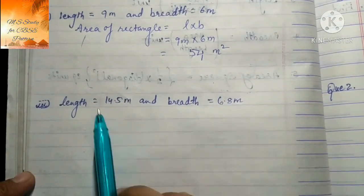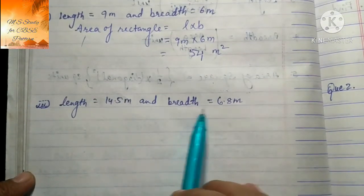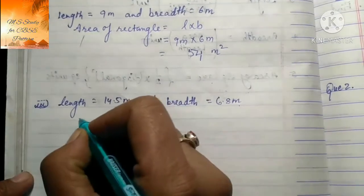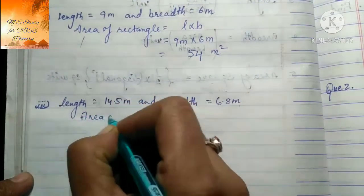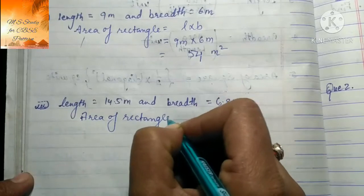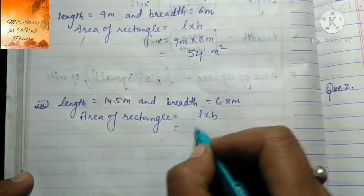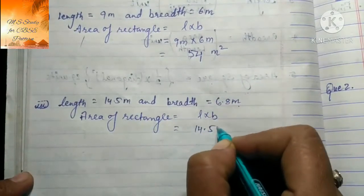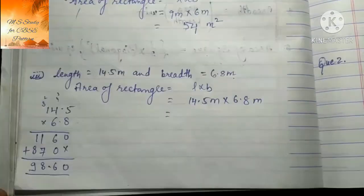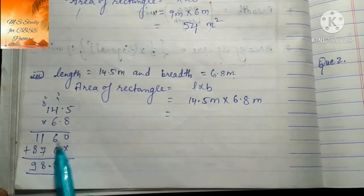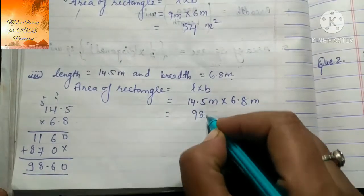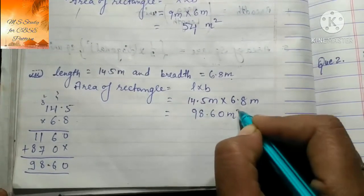Next part: length = 14.5 meter and breadth = 6.8 meter। Area of rectangle = length × breadth = 14.5 m × 6.8 m। Multiply करके answer आता है 98.60 m²।